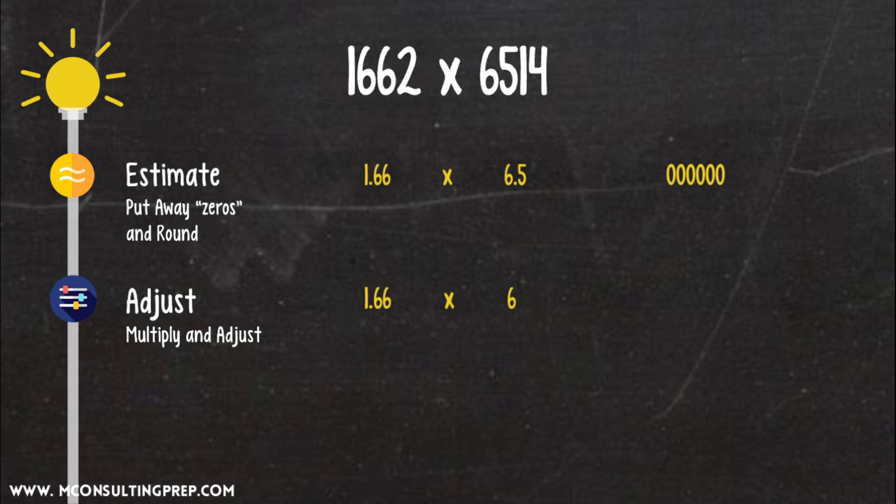Step 2. 1.66 times 6 equals 10. Adjust up. Lazy ballpark method would give us 11. A more precise method would say 0.5 times 1.66 equals roughly 0.8. So the adjusted one would be 10.8. Putting in the zeros, and we have 10,800,000. The correct answer is 10,826,268.